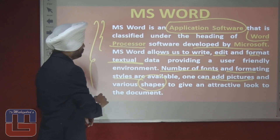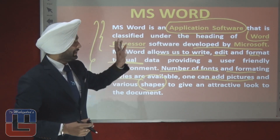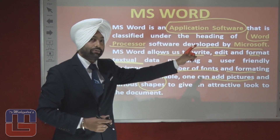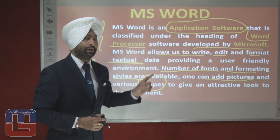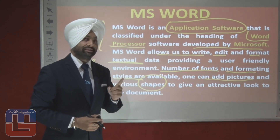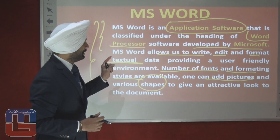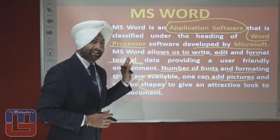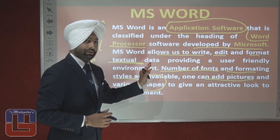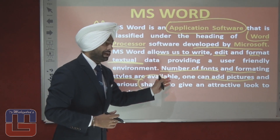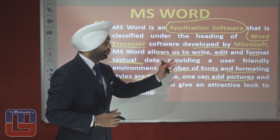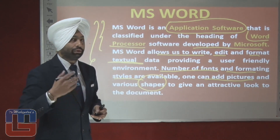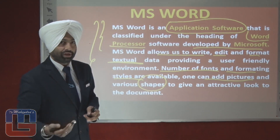To summarize: MS Word is an application software classified under the heading of Word Processor Software, developed by Microsoft. It allows us to write, edit, and format textual data. MS Word also allows us to add fonts, pictures, and formatting styles to make the document look more and more attractive.